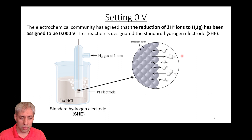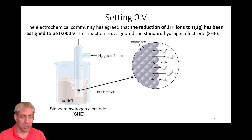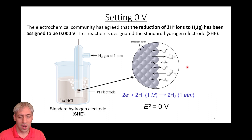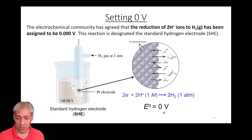Zooming in on what's happening: H⁺ ions from HCl in solution are reduced at the electrode. Electrons from the electrode reduce H⁺ to H·, and two H· combine to give H₂ gas. So you're moving two electrons — two H⁺ plus two electrons gives H₂. This half reaction is designated as our zero value, and we measure everything else relative to it.